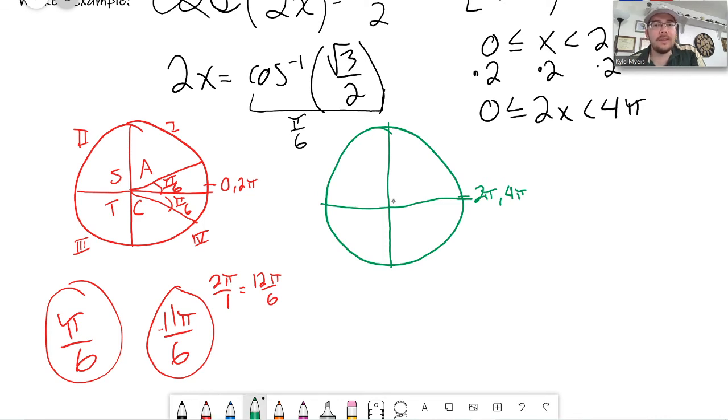So on this next one here, this is a reference angle of π over 6, but this circle is starting at 2π and going to 4π. We need to go all the way out to 4π. Our interval for 2x goes out to 4π, it's twice the interval.